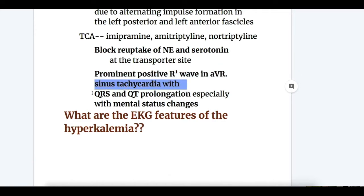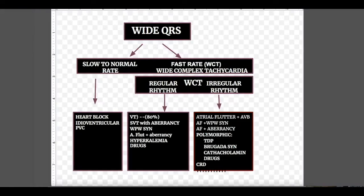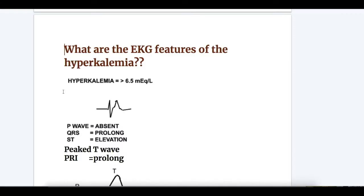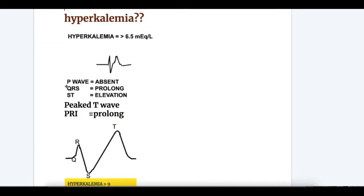Next, hyperkalemia causing regular rhythm wide complex tachycardia. EKG features: the upper normal limit of potassium is 5.5 mEq/L. Hyperkalemia greater than 6.5 mEq/L causes absent P waves, QRS prolongation, ST elevation, peaked T waves, and prolonged PR interval.